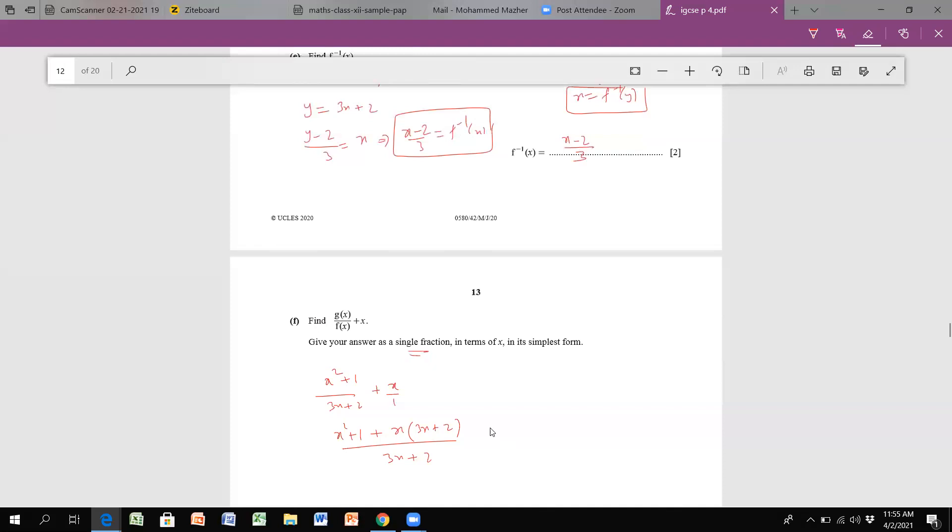Now expand the bracket and check for the like terms: 3x² plus 2x over 3x plus 2. So you have the like terms which will give me 4x² plus 2x plus 1 over 3x plus 2. If we can find the factors it's okay, otherwise we can stop it here. This is our answer for this one.